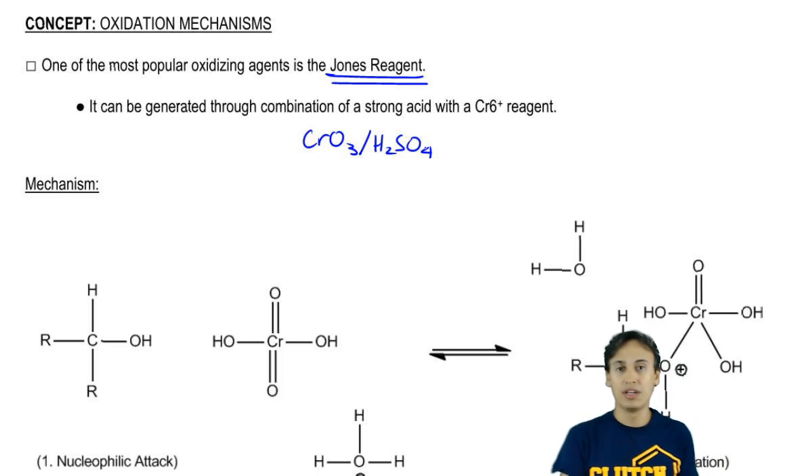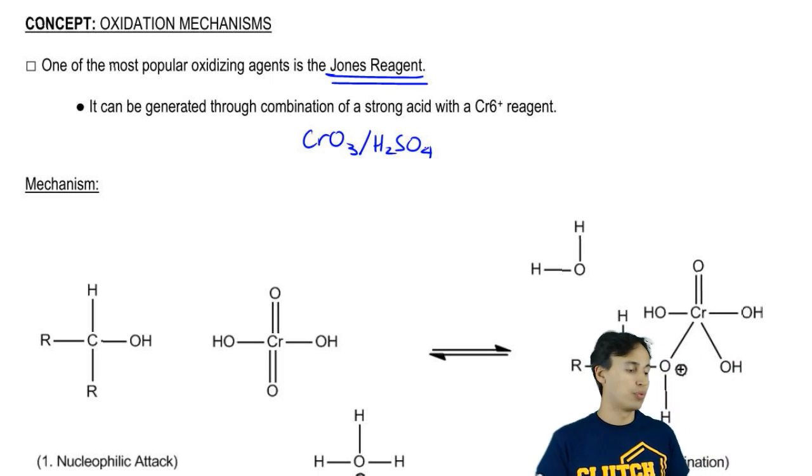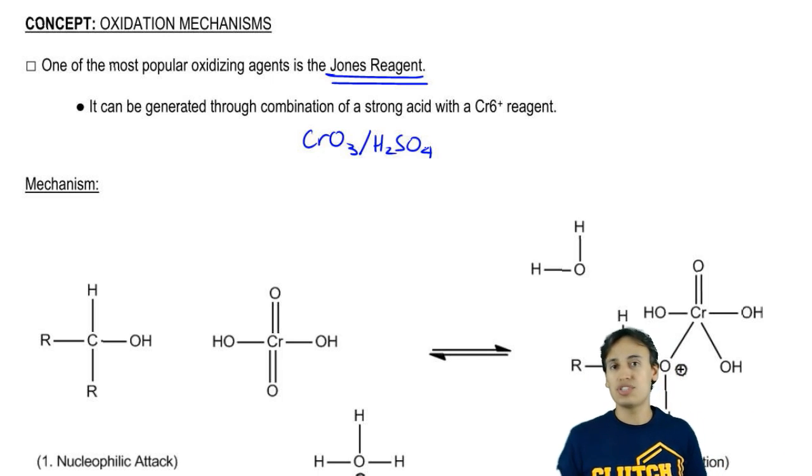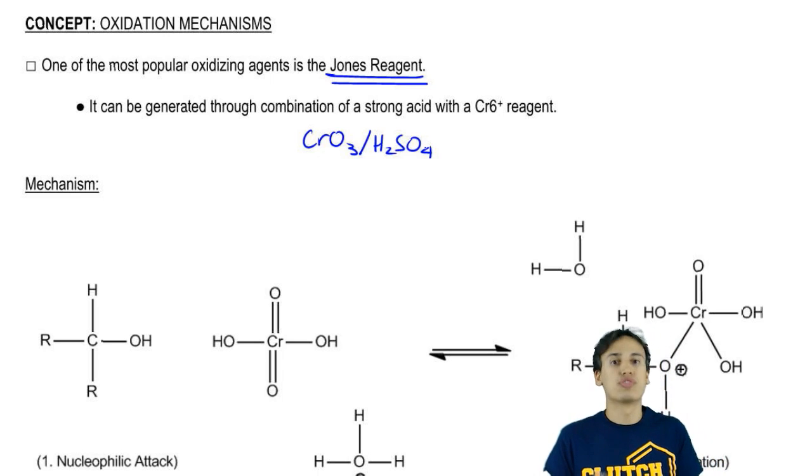This is very common, but you will see it other ways because once the H2SO4 reacts with the CrO3, it's going to change and look a little bit different. But as long as you see a chromium reagent with a strong acid, that's pretty much a Jones Reagent.